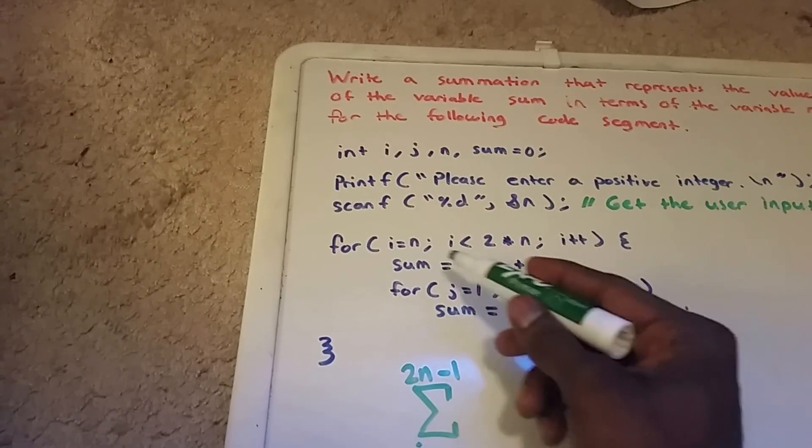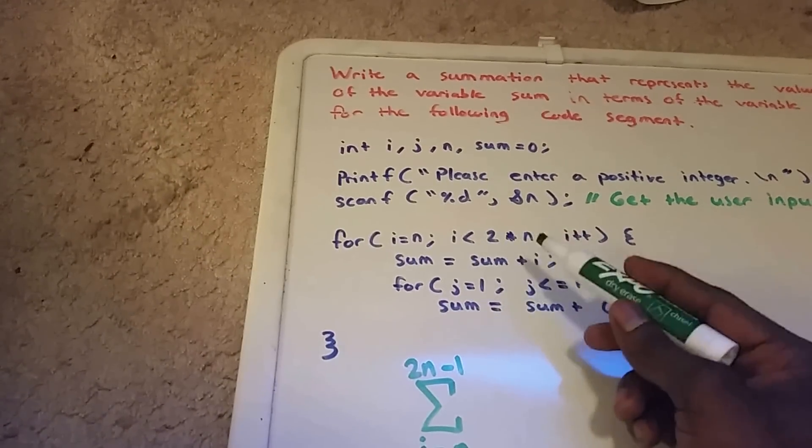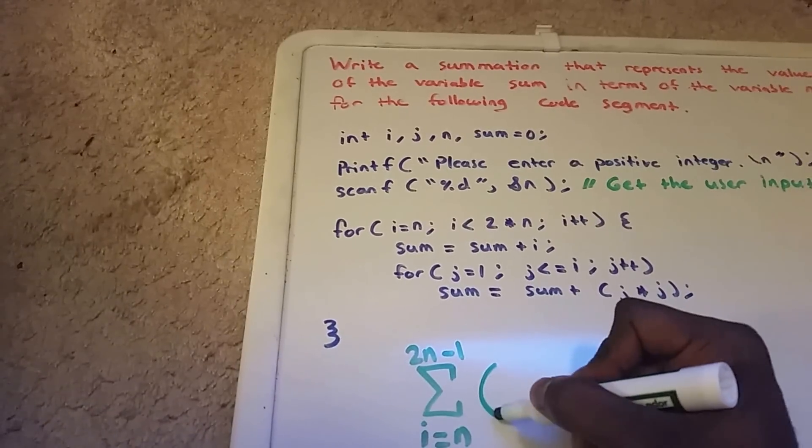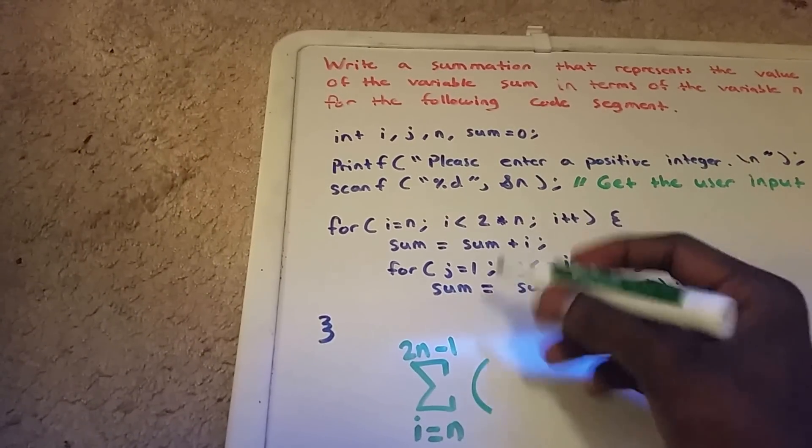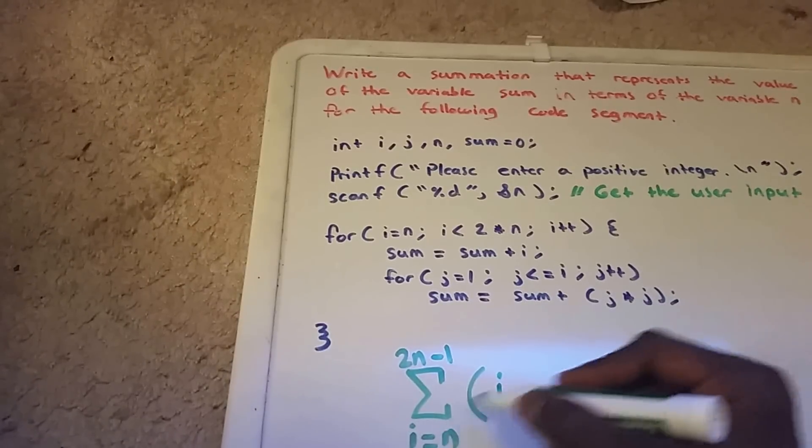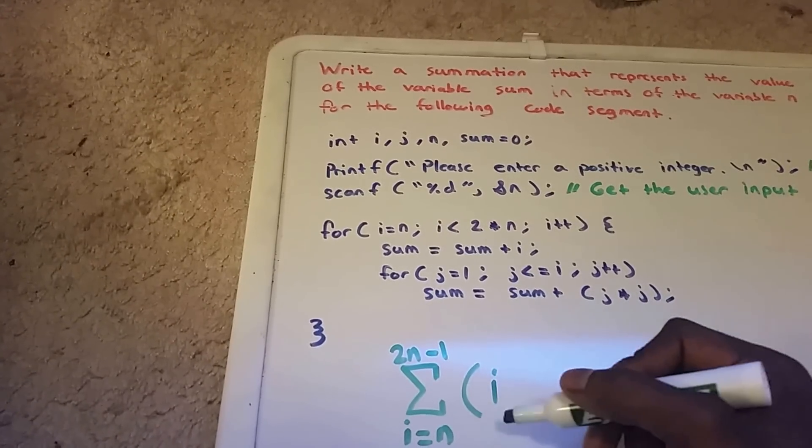Next we have our sum equaling sum plus i. So within this loop we have our sum equaling sum plus i, so this would be our variable i here.